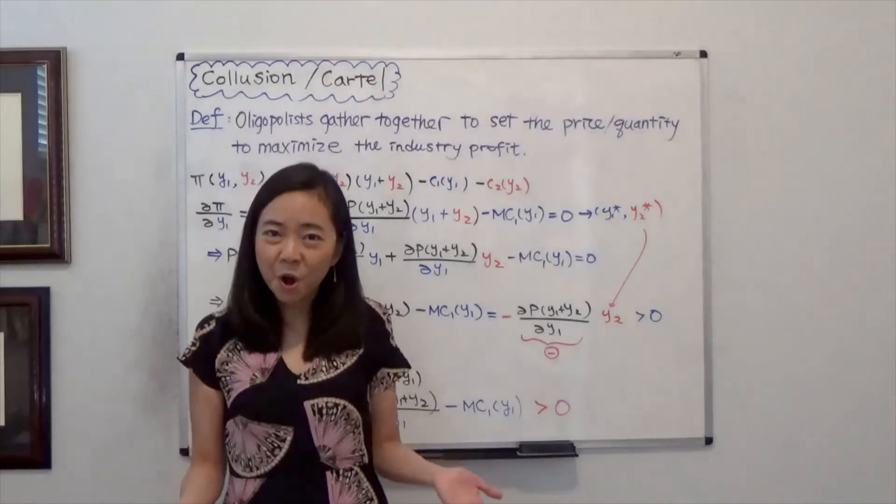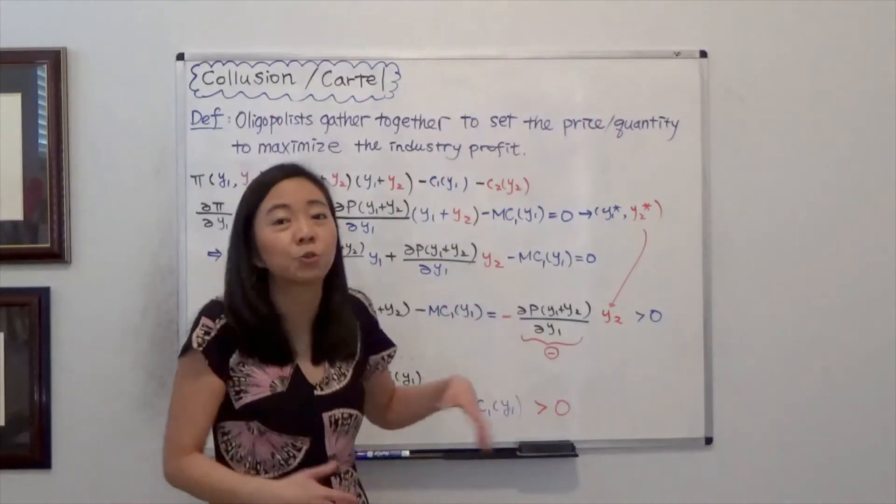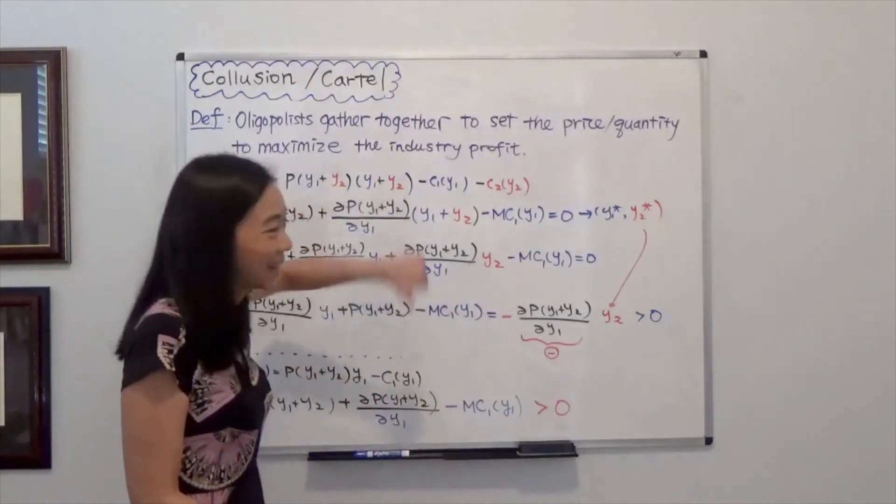Now, due to the law of demand, we know that if both firms are increasing the quantity, then the price is going to go down.